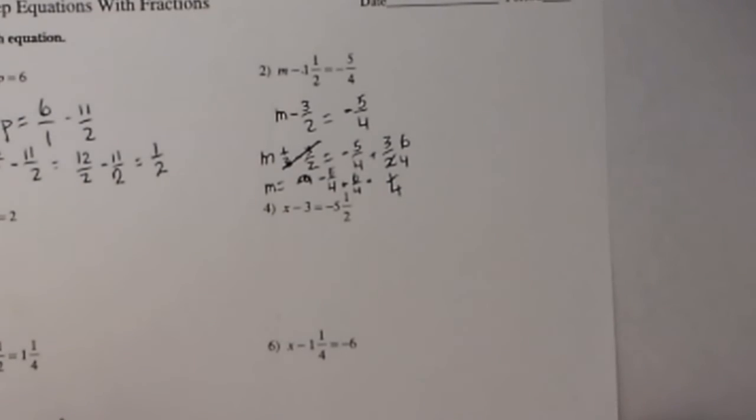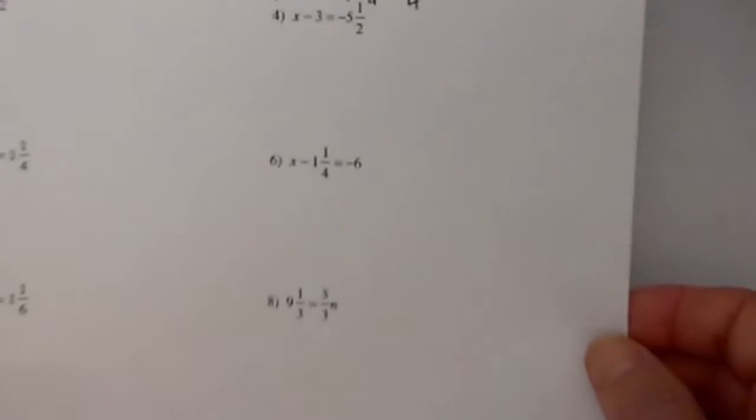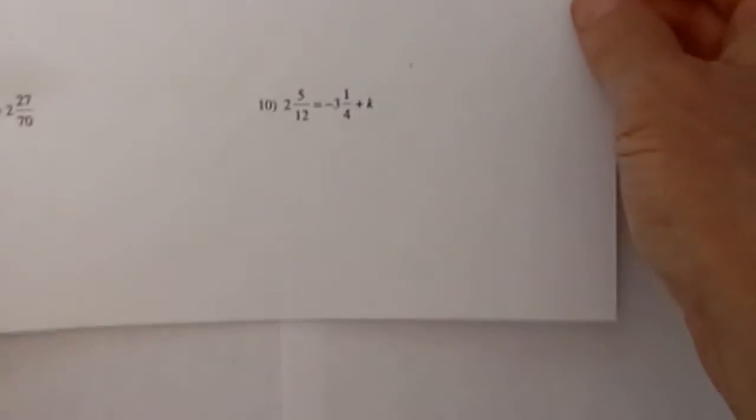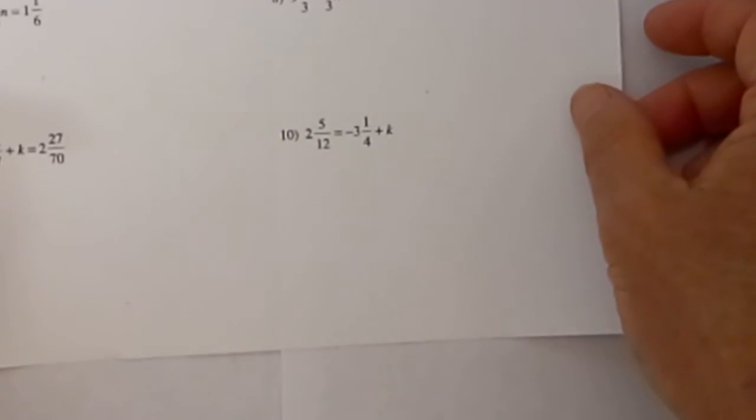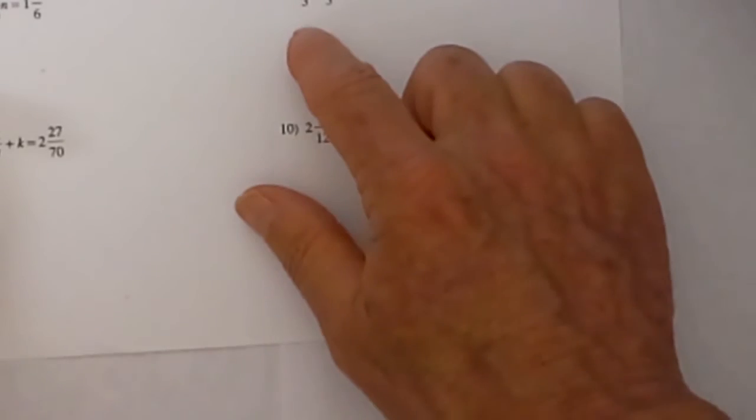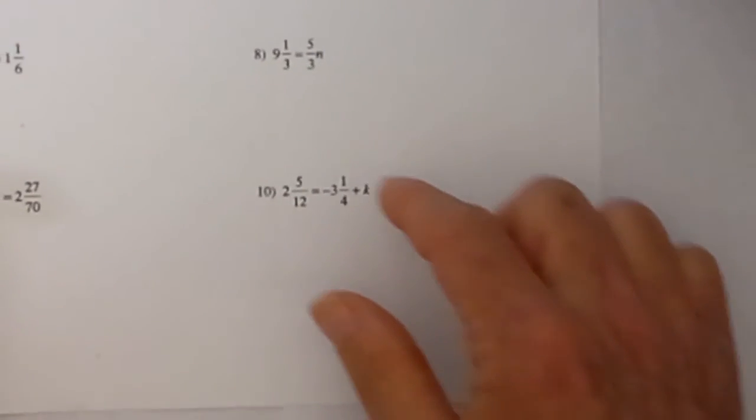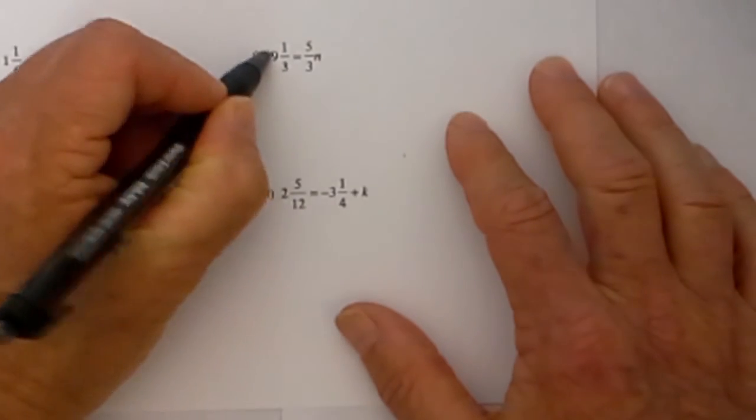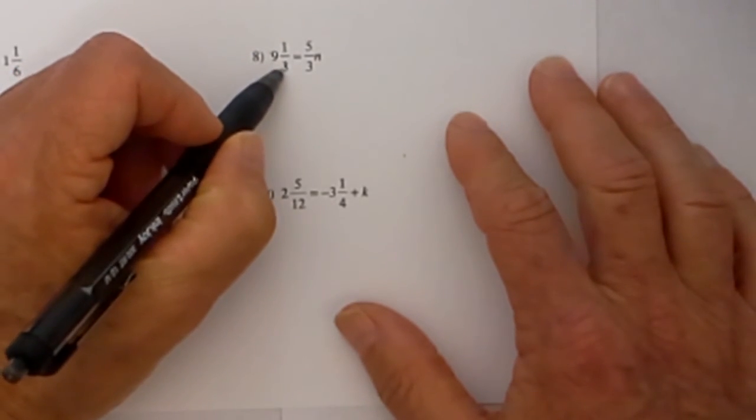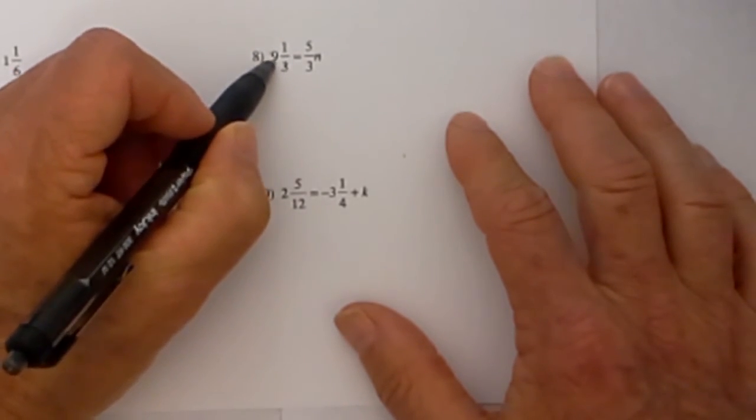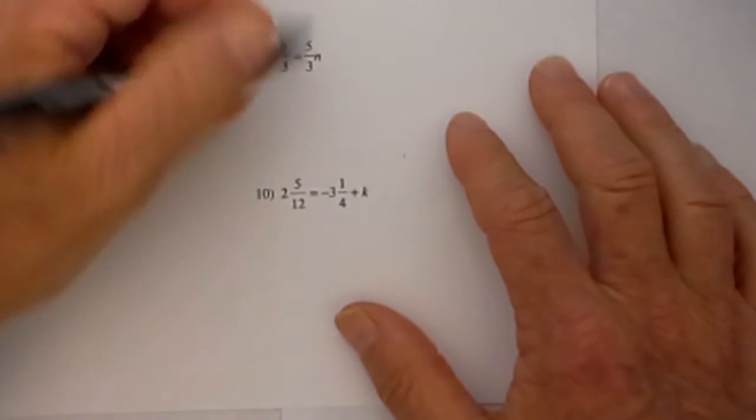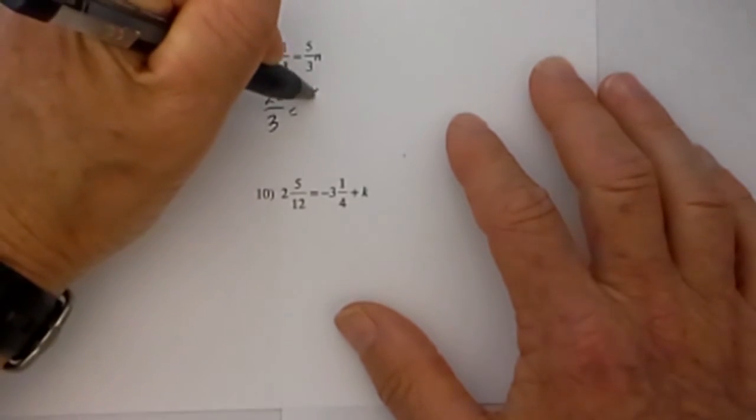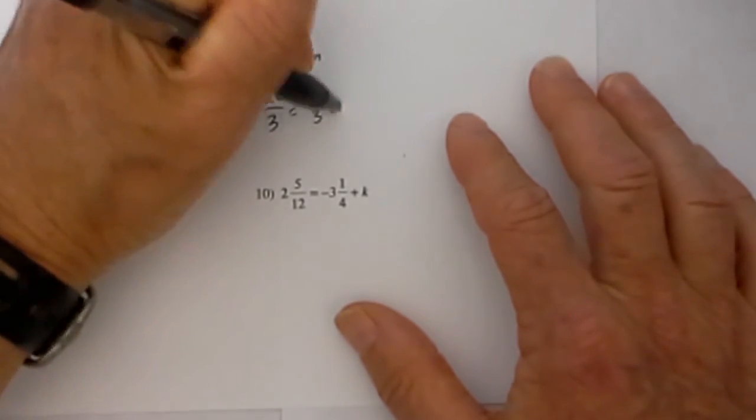Next let's move down to our last one and it is going to be 9 and 1 third is equal to 5 thirds n. The first thing I will do is convert it to an improper fraction. 3 times 9 is 27 plus 1 is 28 thirds equals 5 thirds n.